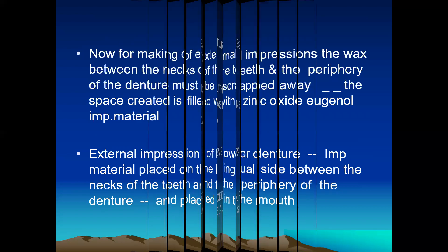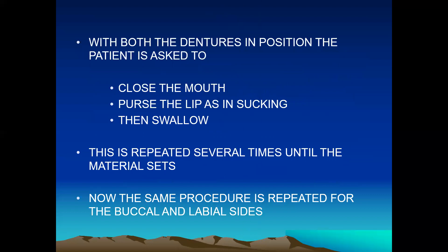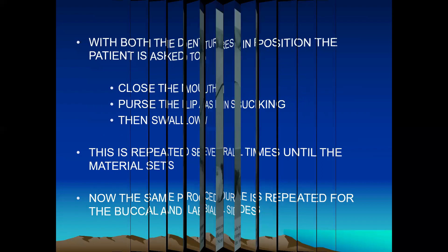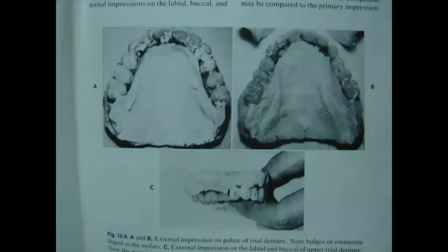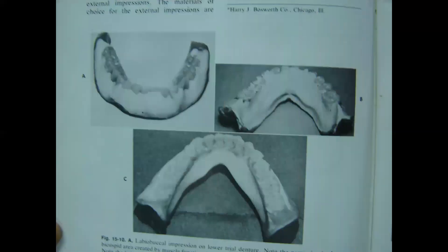The same is done for the lower denture. With both dentures in position, the patient is asked to close the mouth and do various functional movements as in the previous case. This is repeated several times until the zinc oxide eugenol impression material sets. The same procedure is then repeated for the buccal as well as labial sides. In the diagram we can see the zinc oxide eugenol impression paste between the artificial teeth and denture periphery for the lingual side, and this is repeated for the labial and buccal sides. We can see the tongue contour in the palatal surface of the upper arch and the concavity in the lingual flange.